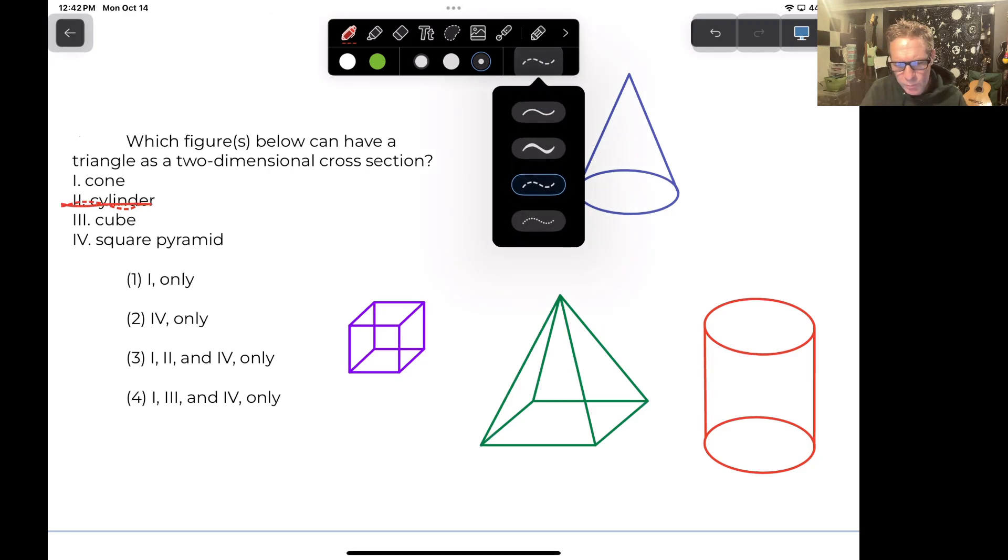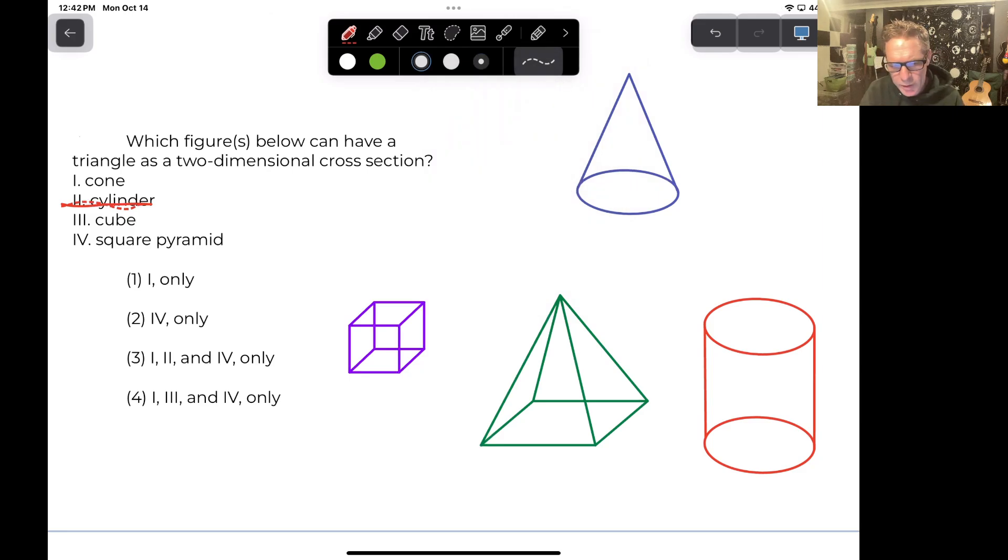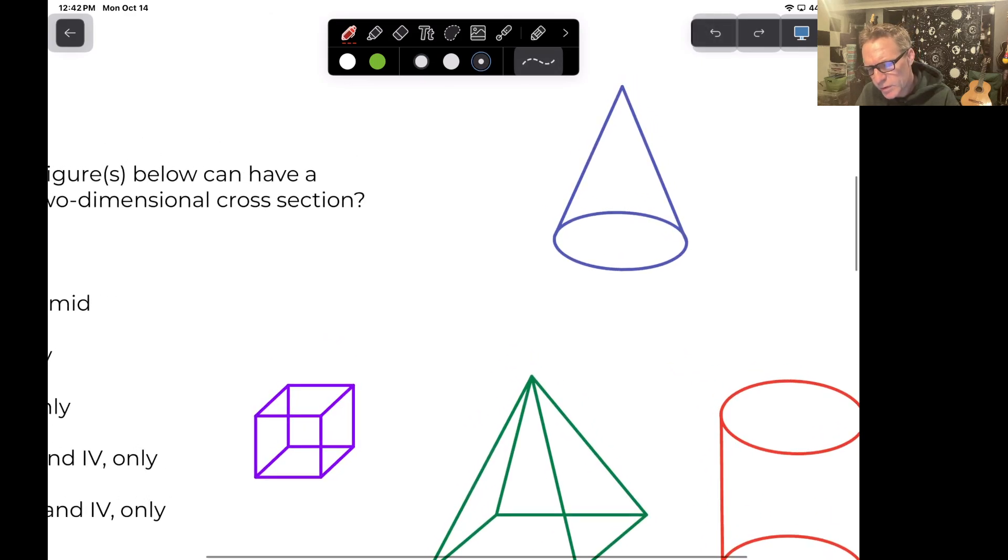Now let's talk about the first one, the cone. If I slice this cone kind of down vertically from the vertex, the pointy part of the cone is known as the vertex. If I slice it down that way, then yeah, you could create a triangle.